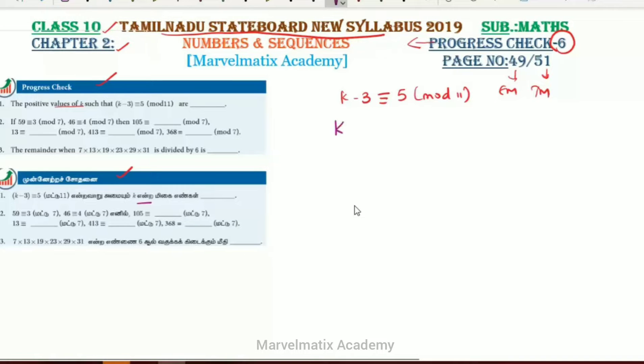The question states that a minus b is divisible by 11, so it means a minus b divided by 11 has remainder 0. This is the concept of k minus 3 is congruent to b mod n.